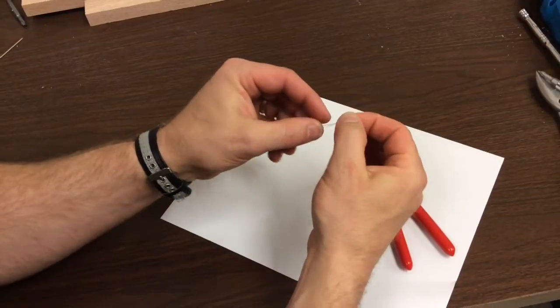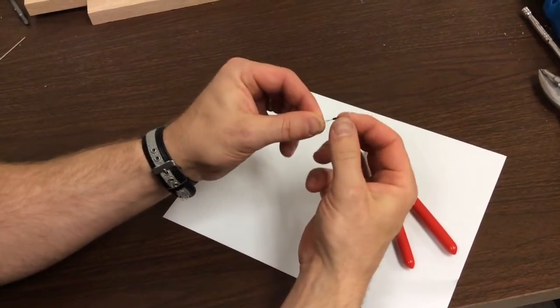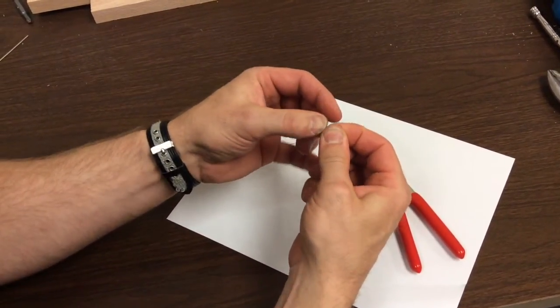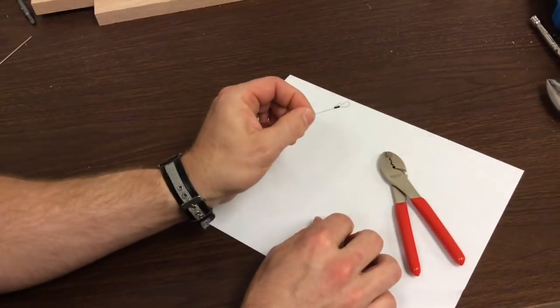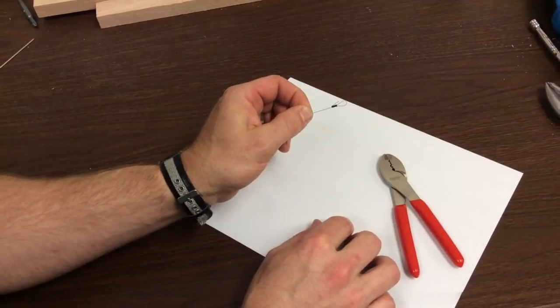Now, just for good measure, you're going to take that little bit that you left out and bend it back over just to hold it a little tighter. Now you're ready to place your wire on your Kanjo.